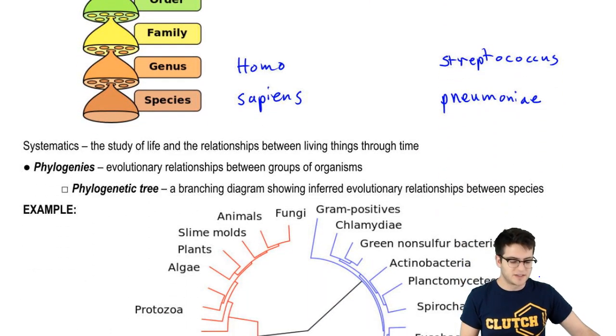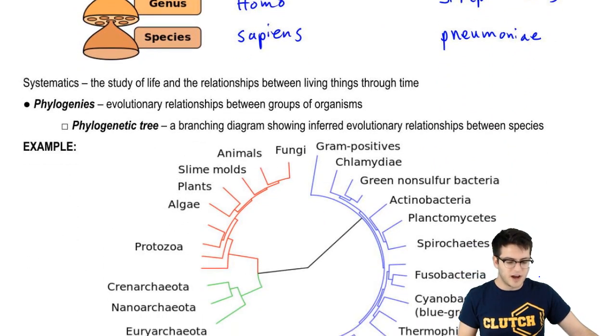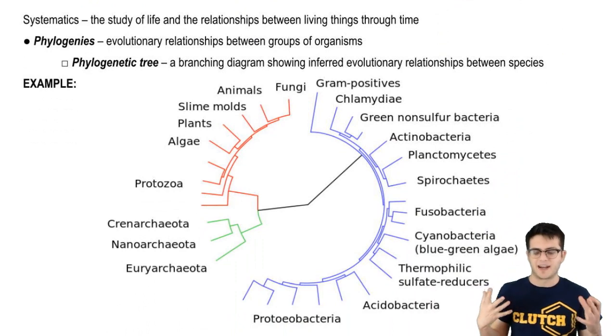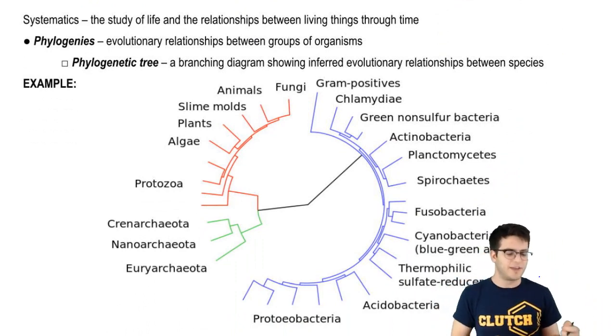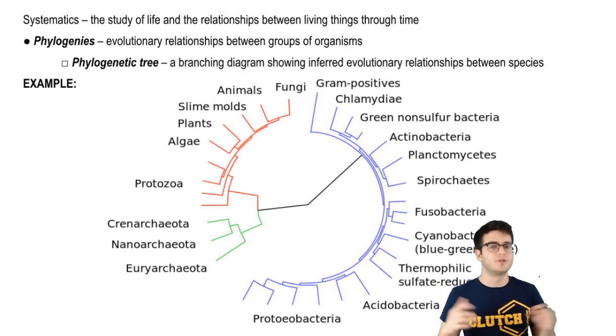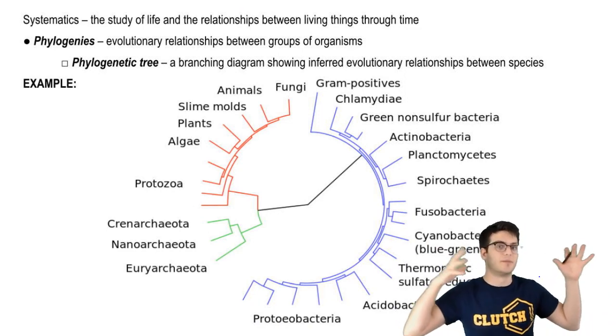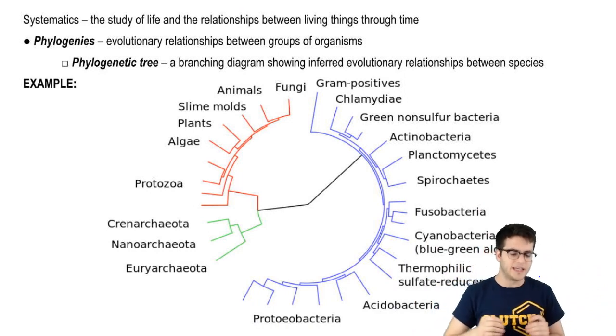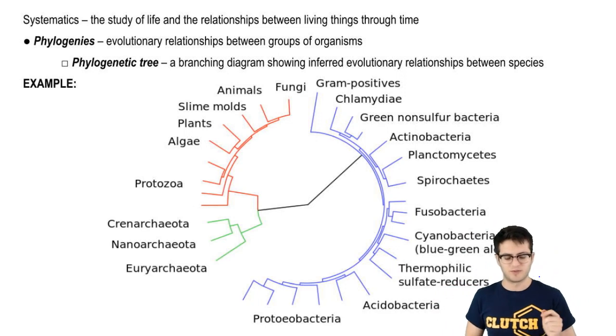Phylogenetics falls under the broad category of systematics, which is the study of life and the relationships between living things through time. This is a really big umbrella category, and phylogenies specifically explore the evolutionary relationships between groups of organisms.